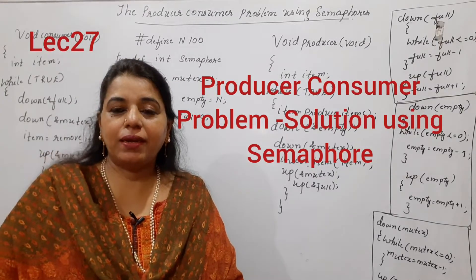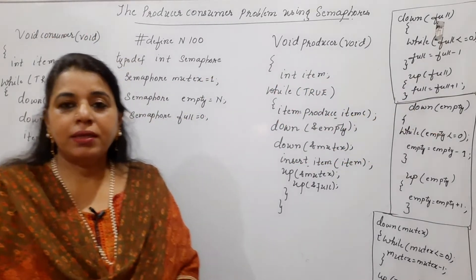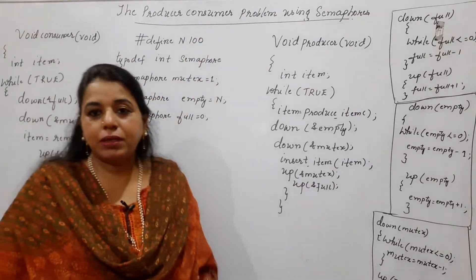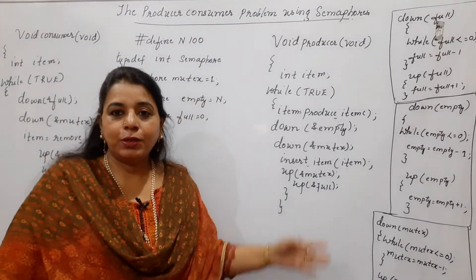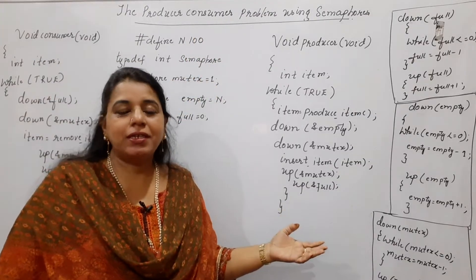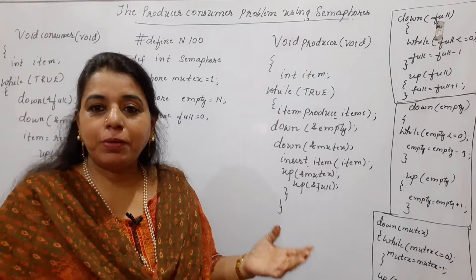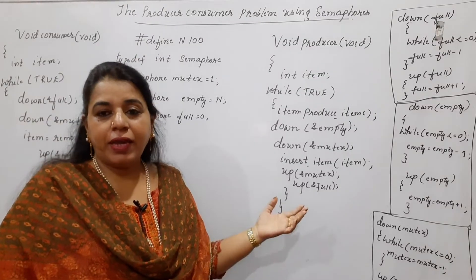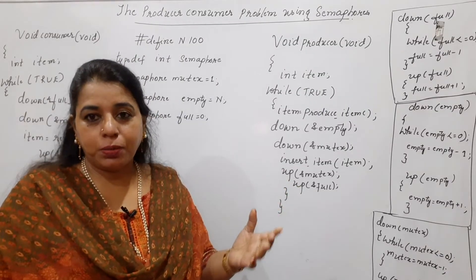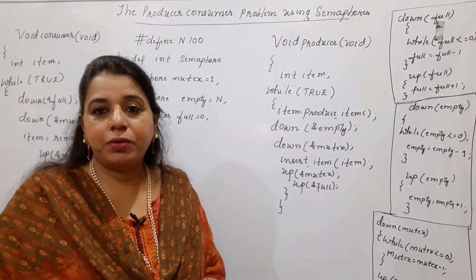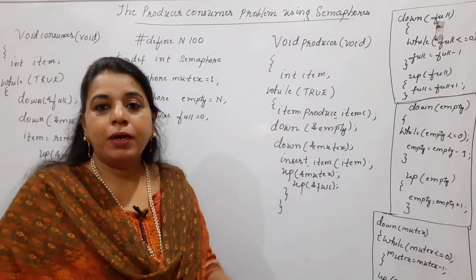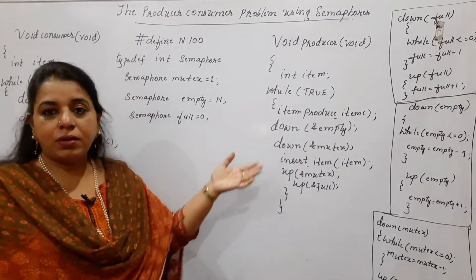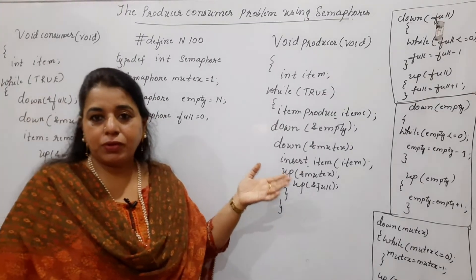Hello viewers, welcome back to my channel. This session I shall be explaining the producer-consumer problem using semaphores. In one of my previous sessions, I explained the producer-consumer problem using sleep and wake up, where we saw that the producer and consumer both enter into a deadlock state. To overcome that particular problem, the concept of semaphores was introduced.